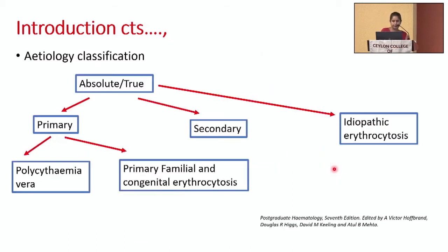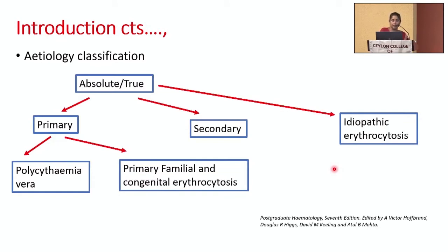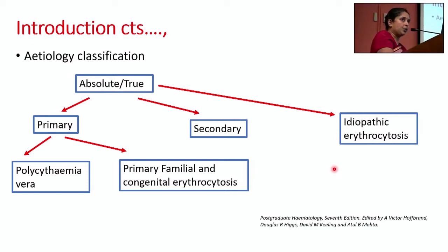Broadly, we classify erythrocytosis as true polycythemia or relative/apparent polycythemia. True polycythemia is further divided into primary or secondary causes, or a separate entity called idiopathic erythrocytosis — where all primary and secondary causes have been excluded. In the primary classification, polycythemia vera is a myeloproliferative neoplasm and clonal disorder, and there are also inherited conditions called primary familial and congenital erythrocytosis.